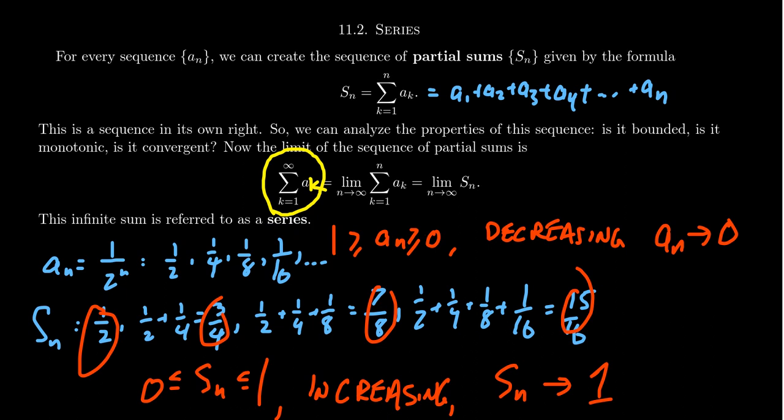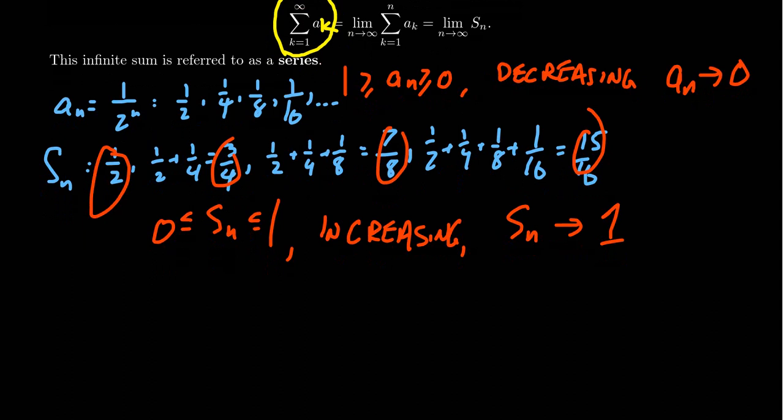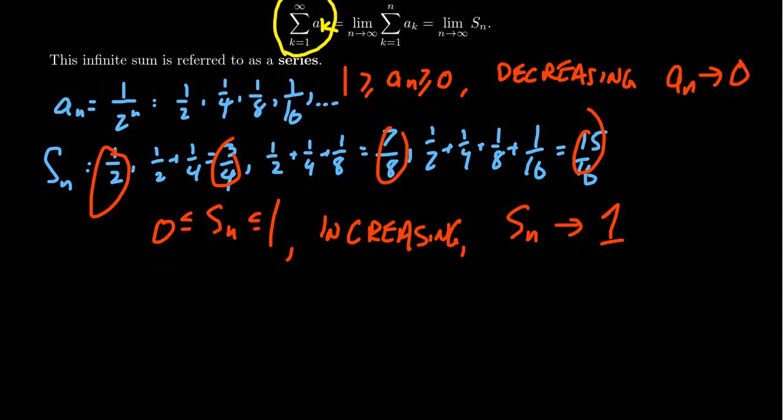Now this thing could be convergent. It could be divergent. It's going to depend on properties of the sequence in play here. But I want to mention that this idea of an infinite sum, these series, is actually quite natural, right? Believe it or not, these infinite series can, in fact, converge to finite numbers, as kind of alluded to in this example.